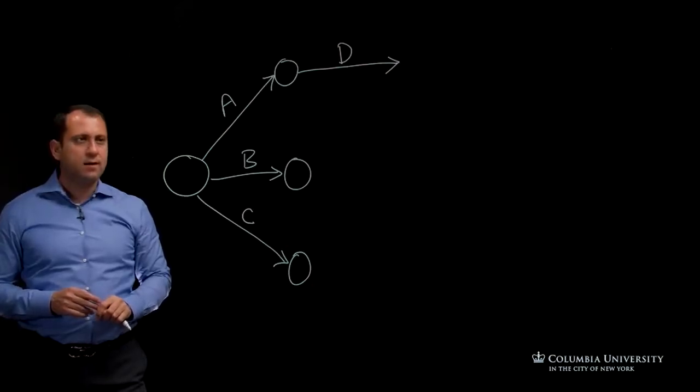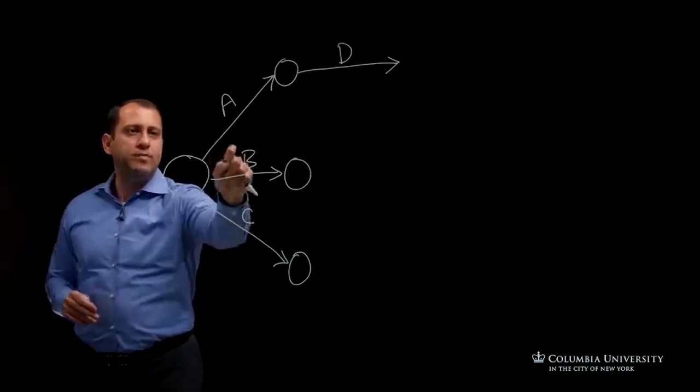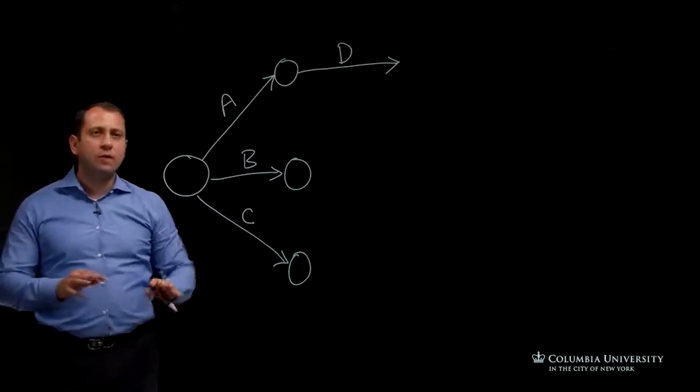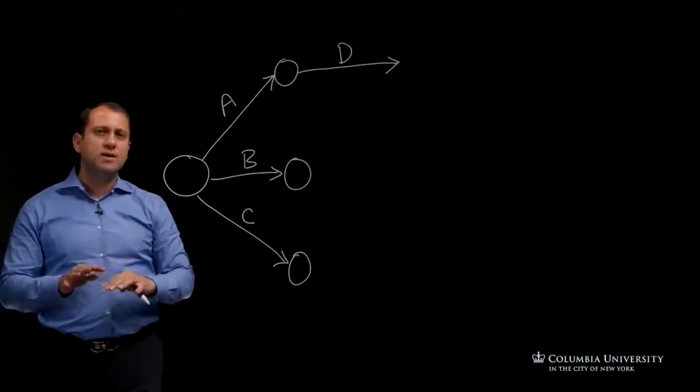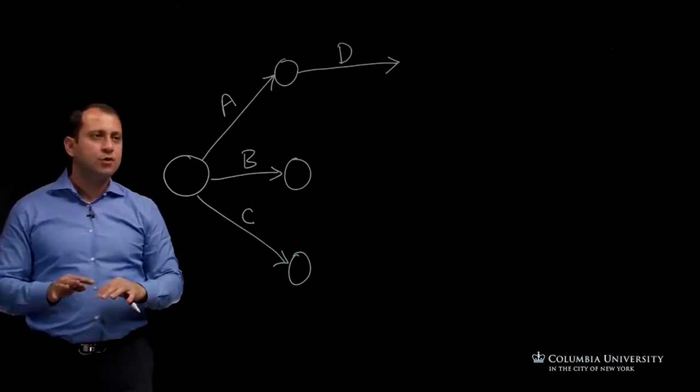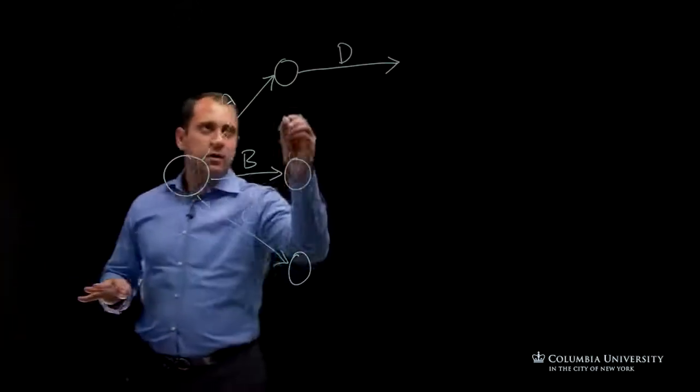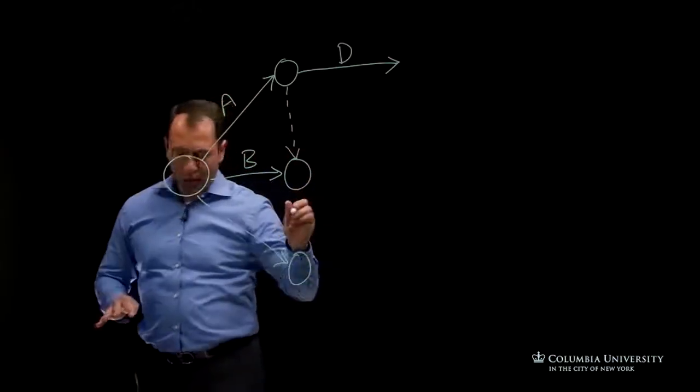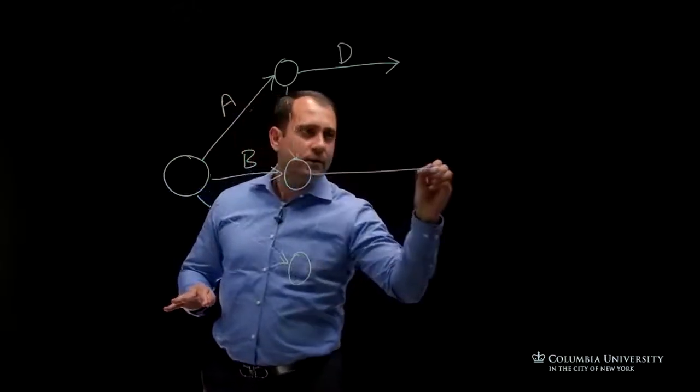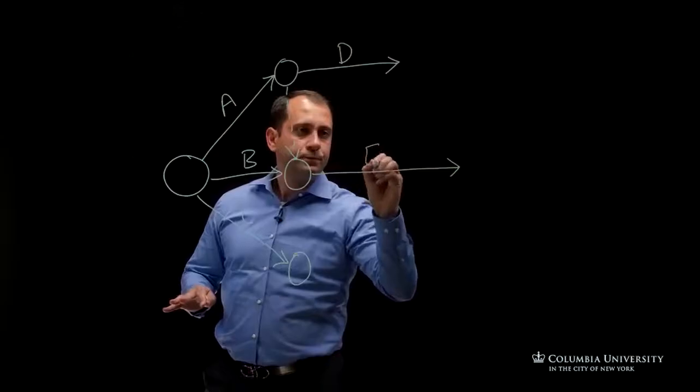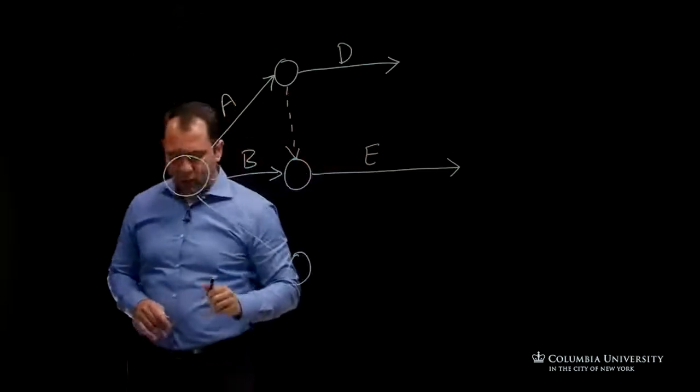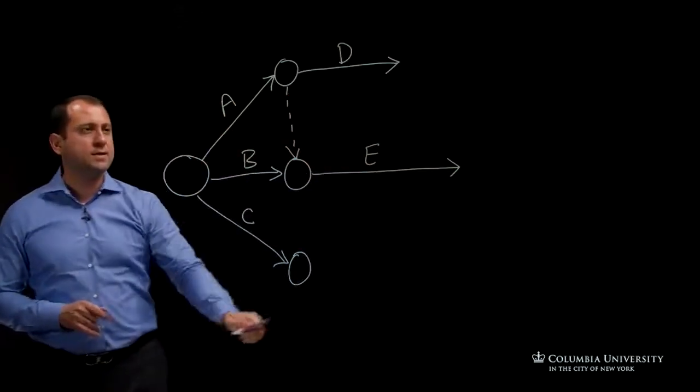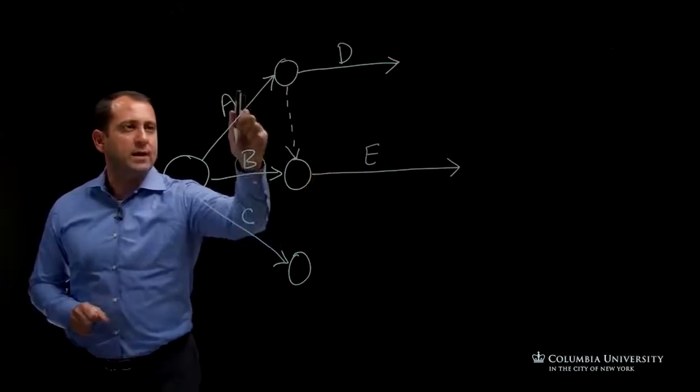Then we have activity E. The predecessors are A and B. It's kind of close to what we just covered, so we can have then a dummy activity to highlight activity E here, which is showing the predecessor relationship between E, A, and B.